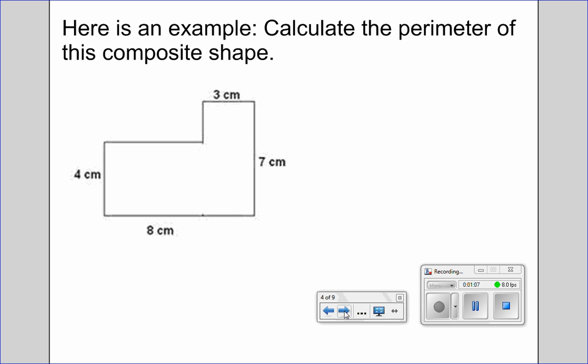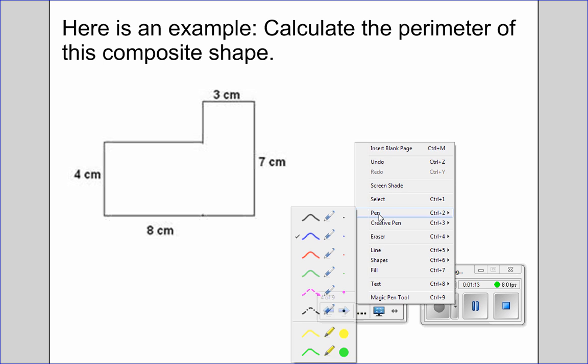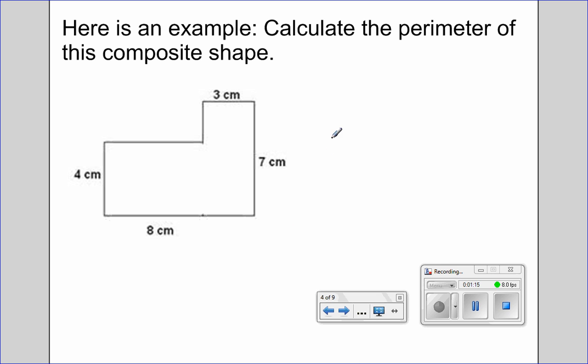Here's an example. Calculate the perimeter of this composite shape. Let's start at the top and work clockwise. We've got 3 plus 7 plus 8 plus 4. And you know what? I threw a trick in here. I left one side blank.